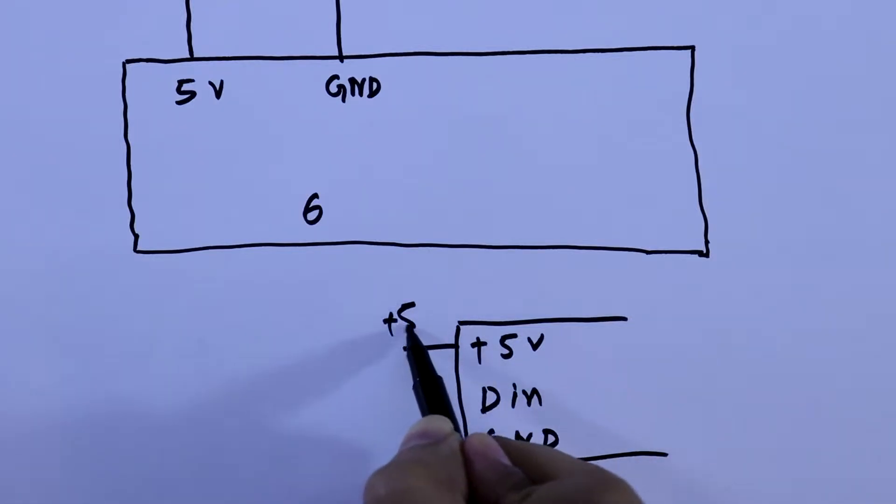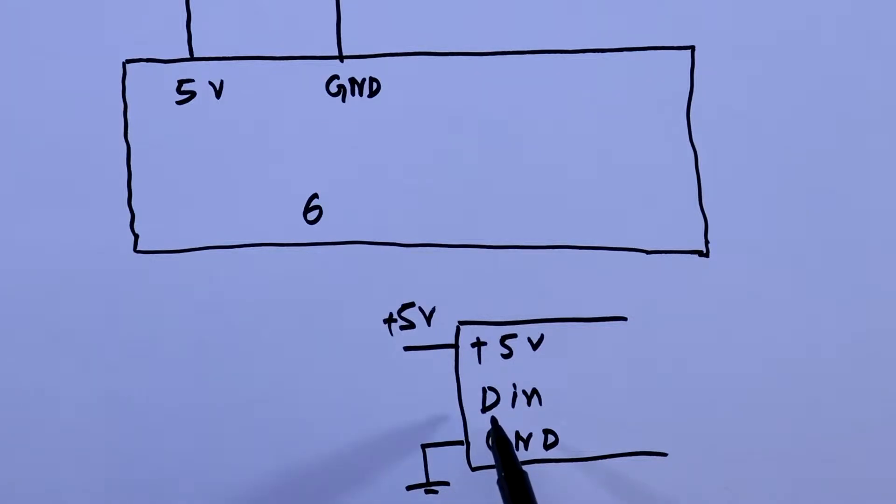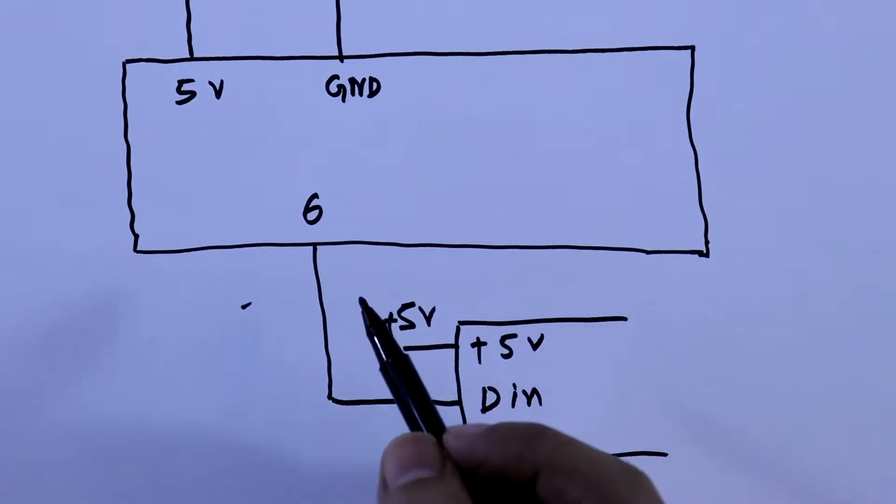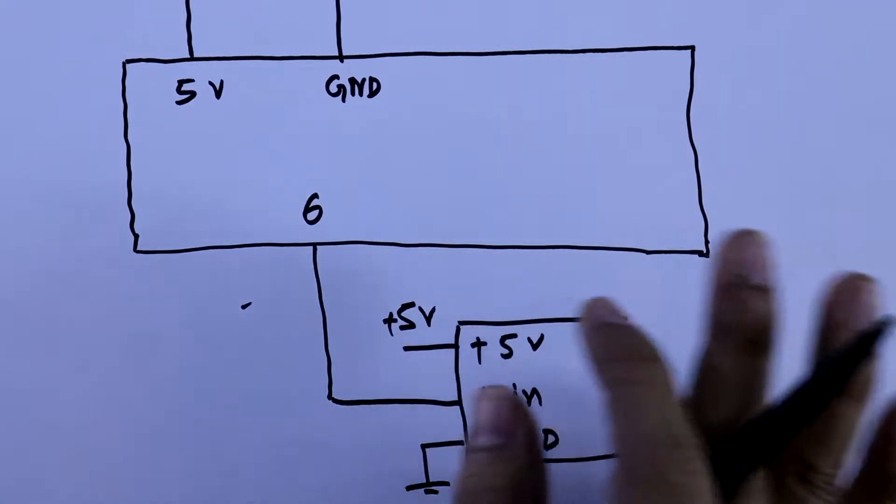This will be connected to the plus 5 volt and ground pin will be connected to the ground, and this din will connect to pin number 6 of Arduino. According to the program we have selected D6. So this is the simple connection.